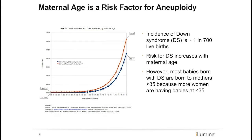When discussing aneuploidy in a prenatal setting, it is commonly discussed in relation to maternal age. Aneuploidy can result if an error occurs during gamete formation. The egg begins meiosis at the time of ovulation and completes the process at fertilization. One theory is that eggs become more prone to mistakes in meiosis as a woman ages; thus, as maternal age increases, there is an increasing risk for aneuploidy. However, most babies with Down syndrome will still be born to women less than 35 years of age because more women in this population are having babies.